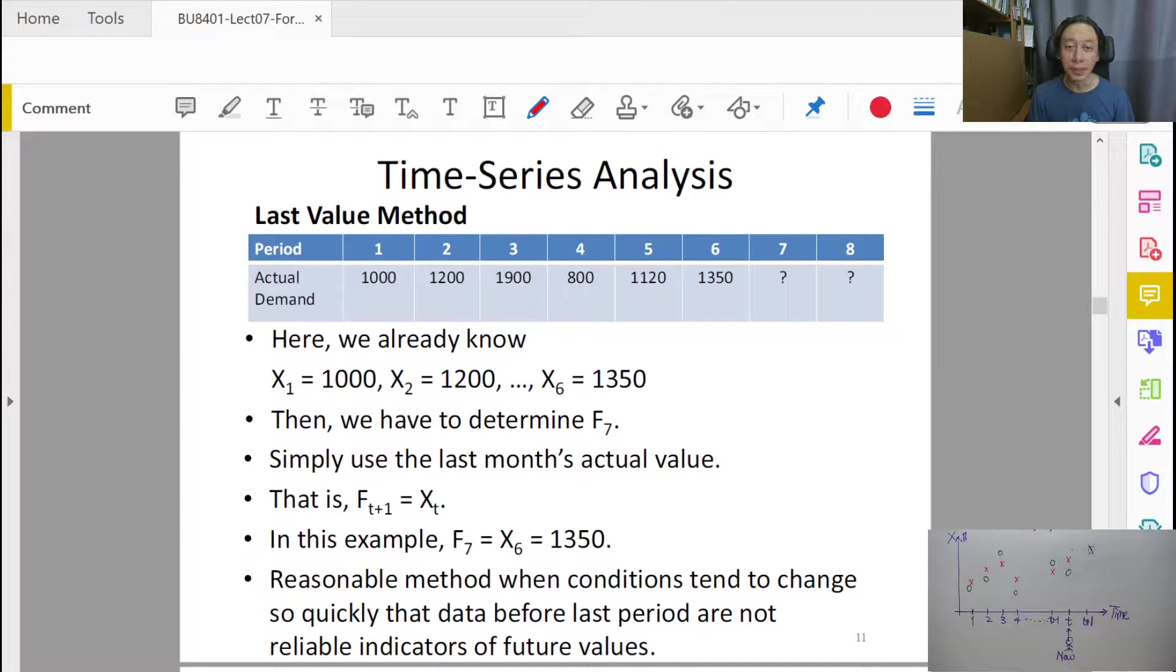If we have this data series, what you do is the next forecast is a copy of the most recent data. That means our X_T, our present data. So our present data at time 6, our T is 6, our present data, the most recent data is 1350.